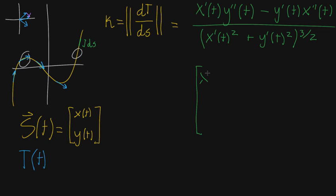So the cross product, if we take x prime, y prime, and these are still functions of t, as a vector crossed with the vector containing the double primes.